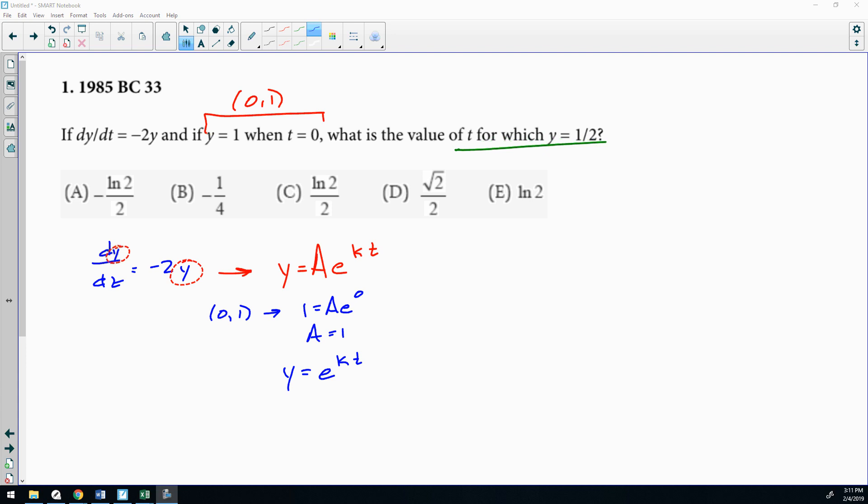I just realized I made a little mistake. We know the value of k in this case. It's dy/dt equals negative 2y, so instead of y equals Ae^(kt), we know that k is negative 2. So it's Ae^(-2t). Then here I plugged in (0, 1) and I solved for A. A ends up being 1, and so my equation is y equals e^(-2t).